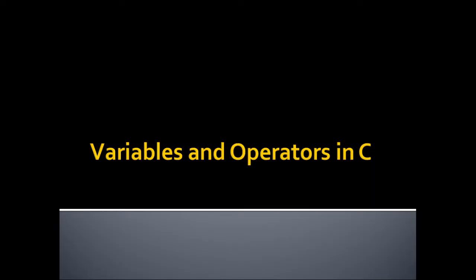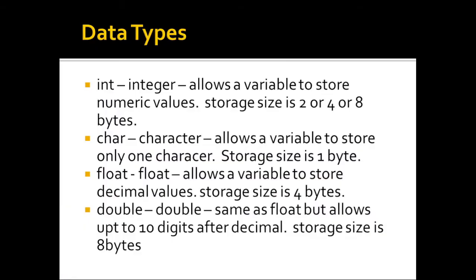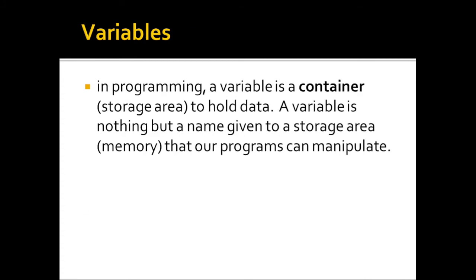Variables, constants, and operators in C language. First, let's discuss the data types used in C. We have int for integer, which allows a variable to store numeric values — storage size can be two, four, or eight bytes depending on the processor. char allows a variable to store only one character with a storage size of one byte. float allows a variable to store decimal values with a storage size of four bytes. double is the same as float but allows up to ten digits after the decimal, with a storage size of eight bytes.